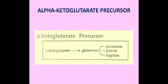Alpha-ketoglutarate is an important metabolic intermediate of the Krebs cycle or tricarboxylic acid cycle. It is first converted to glutamate, and then glutamate gives rise to 3 other amino acids: glutamine, proline, and arginine. The synthesis of glutamate and glutamine is the first reaction in biological systems that incorporates inorganic nitrogen — ammonium — into biological molecules. Glutamate is the source of amino groups in the synthesis of many amino acids and is involved in transamination in most biological reactions.